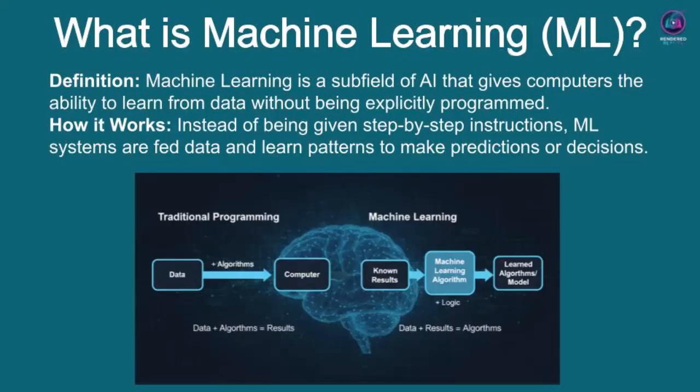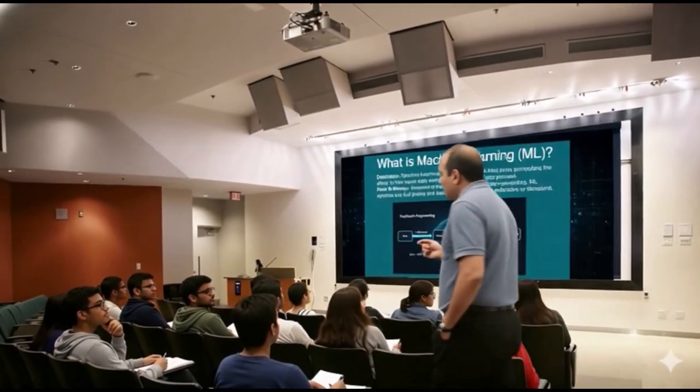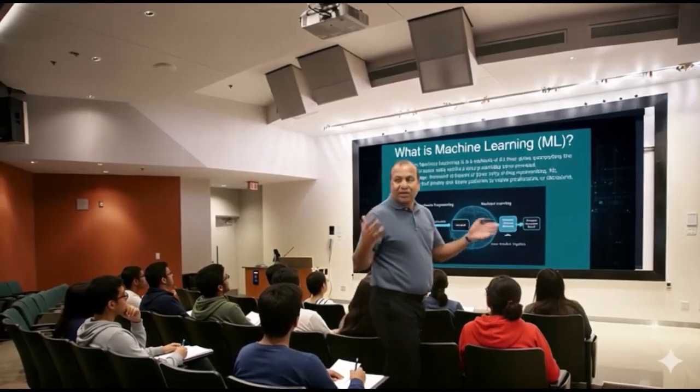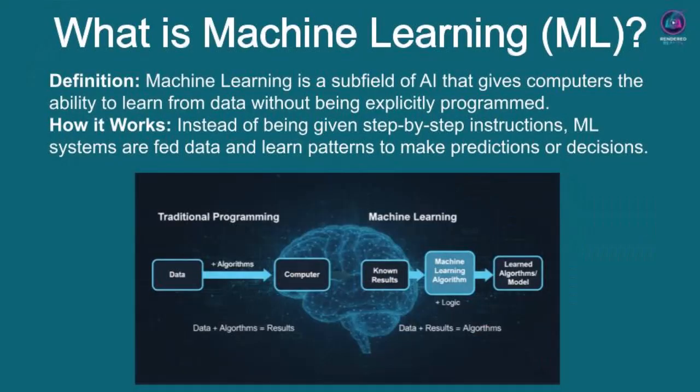Machine learning is a fascinating subfield of AI that gives computers a truly remarkable ability — the power to learn from data without being explicitly programmed for every single task. In traditional programming, we provide the computer with data and very specific step-by-step algorithms — essentially a set of rules — and the computer processes these to give us a result.